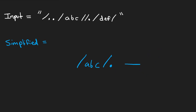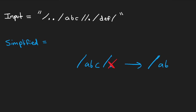If we had a single dot operator, it's slightly different. Single dots are always just going to be ignored — they tell us we're in the current working directory. So if we start inside ABC and do the single dot, we just stay where we are. When we make our simplified path, we're going to have ABC. We're not going to include the dot anywhere.